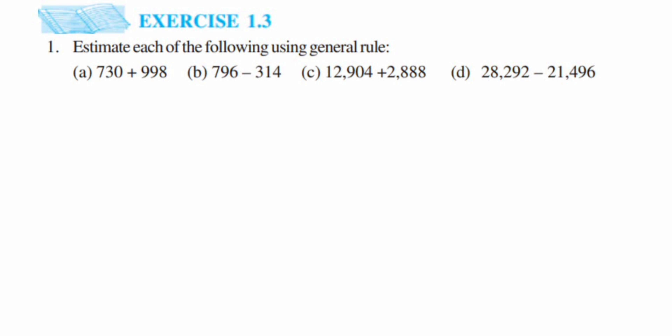Hey everyone, here's a question from Exercise 1.3, the first question of Class 6 'Knowing Our Numbers'. The question is to estimate each of the following using a general rule. You might have solved the same type of question in lower classes — fifth and fourth class. The same question is repeating here, and it may come for one mark, so don't ignore it. It may come for fill-in-the-blanks or true/false type.